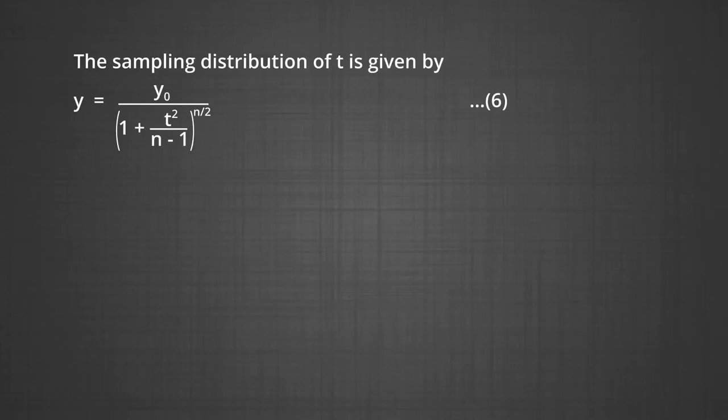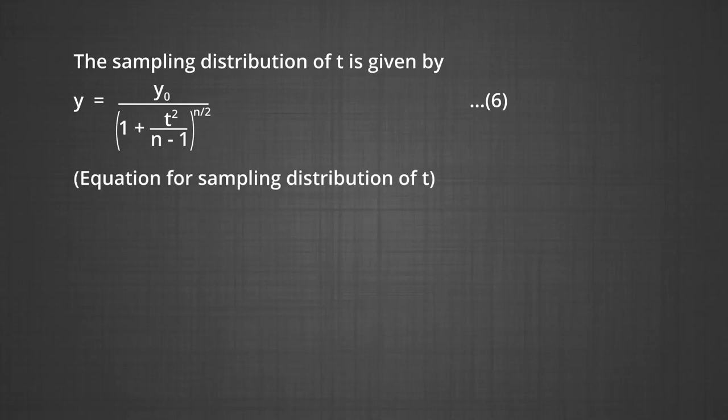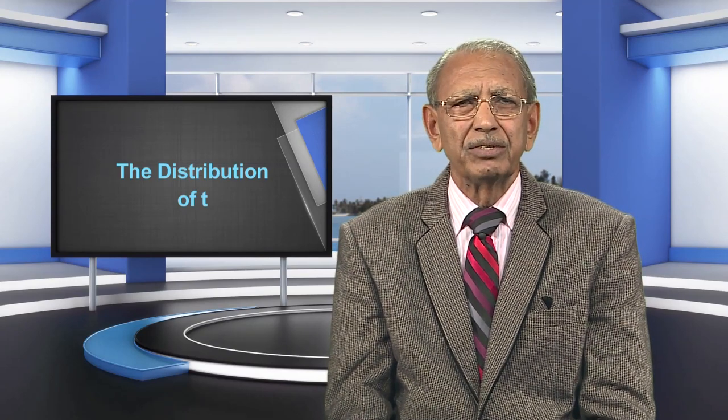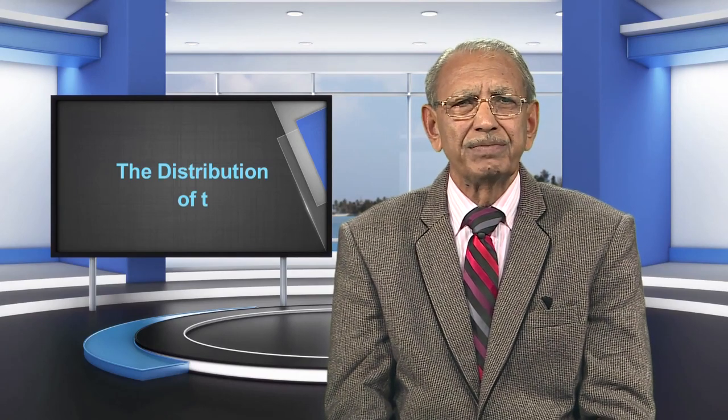The sampling distribution of T is given by the formula: Y equals Y-naught divided by (1 plus T-squared divided by n minus 1), raised to the power n over 2. In this equation, n is the number of cases in the sample and Y stands for the length of the ordinate. The denominator is minimum when T equals 0, and hence the height of the ordinate is maximum at that point. Since the squared value of T is used, the ordinate Y will be the same for positive and negative values, generating a symmetrical distribution. As T increases, the ordinate Y decreases, and the curve is asymptotic to the baseline. The curve is much like the normal curve, except that it is more peaked for small n's; as n grows, the T distribution approaches normality.